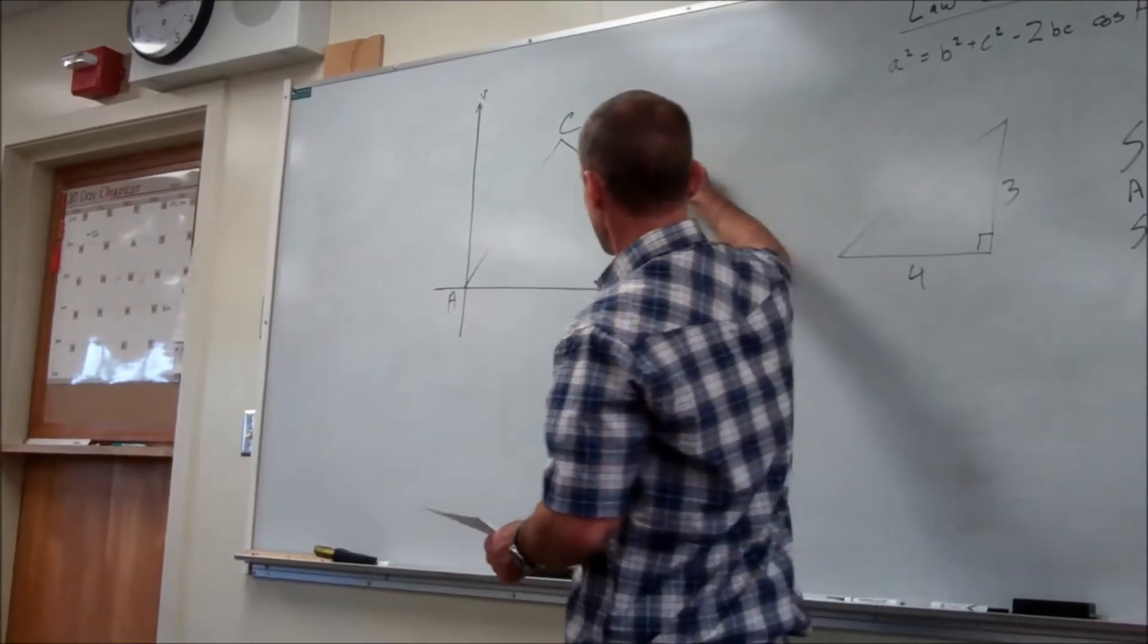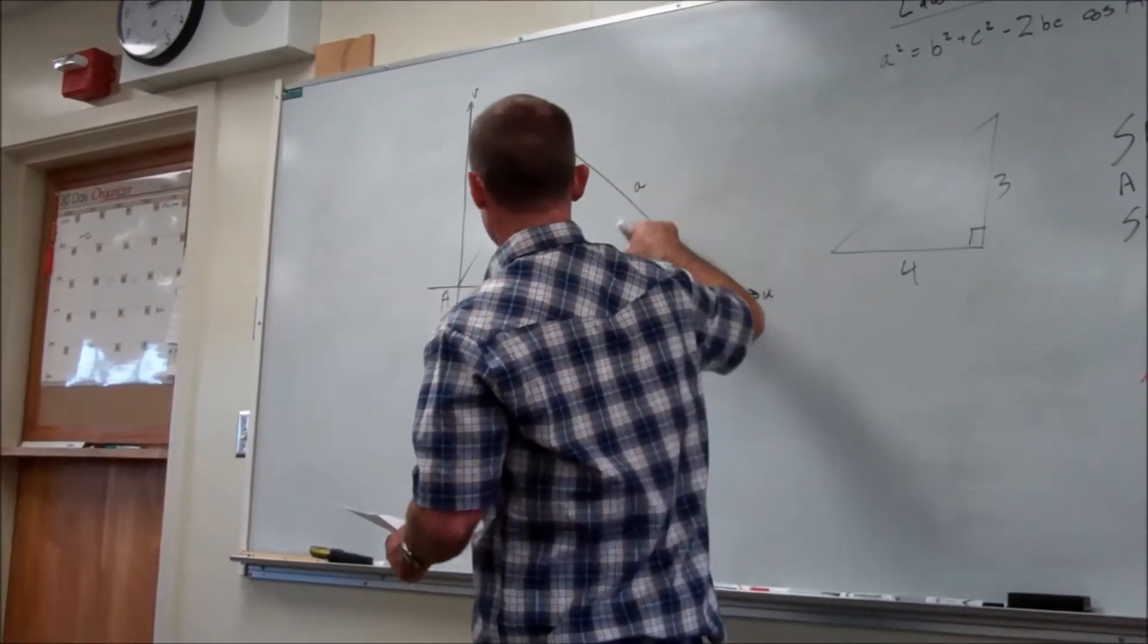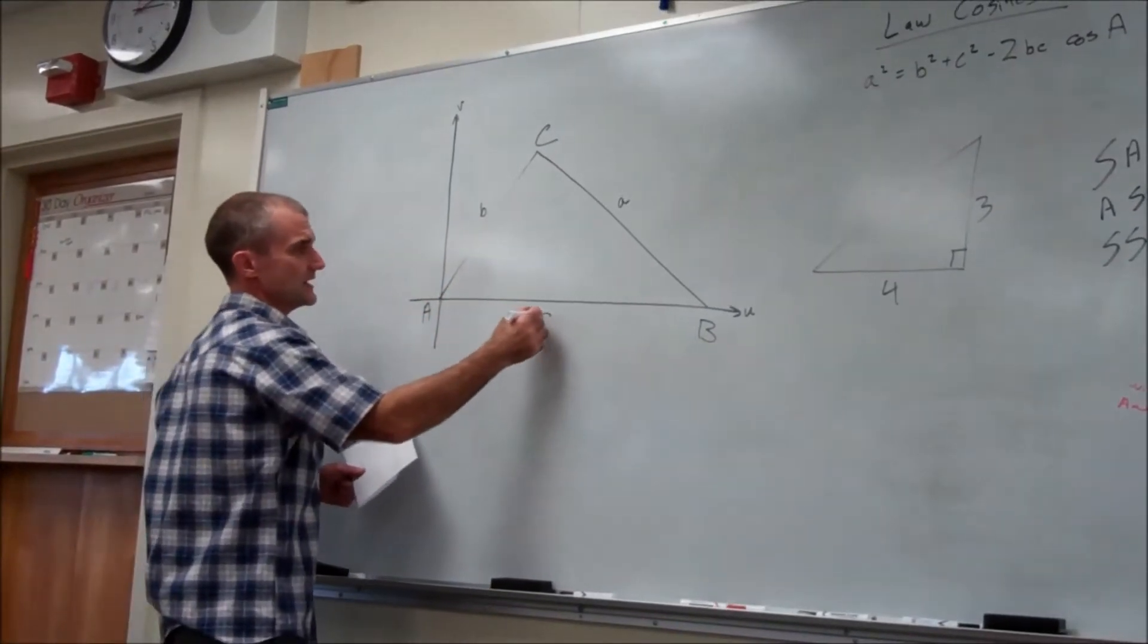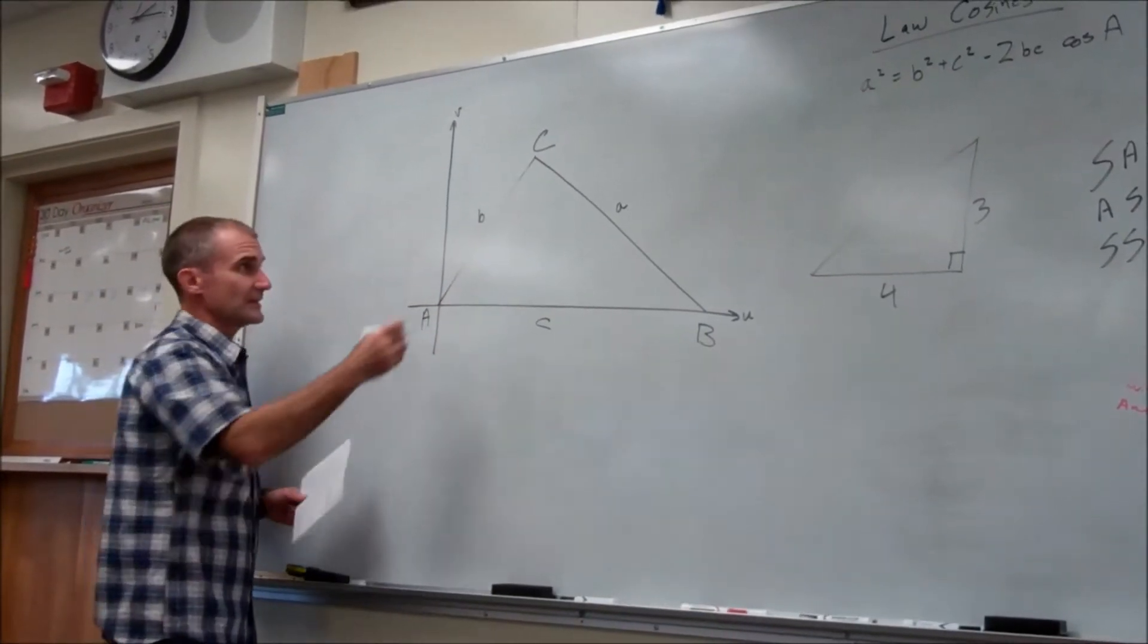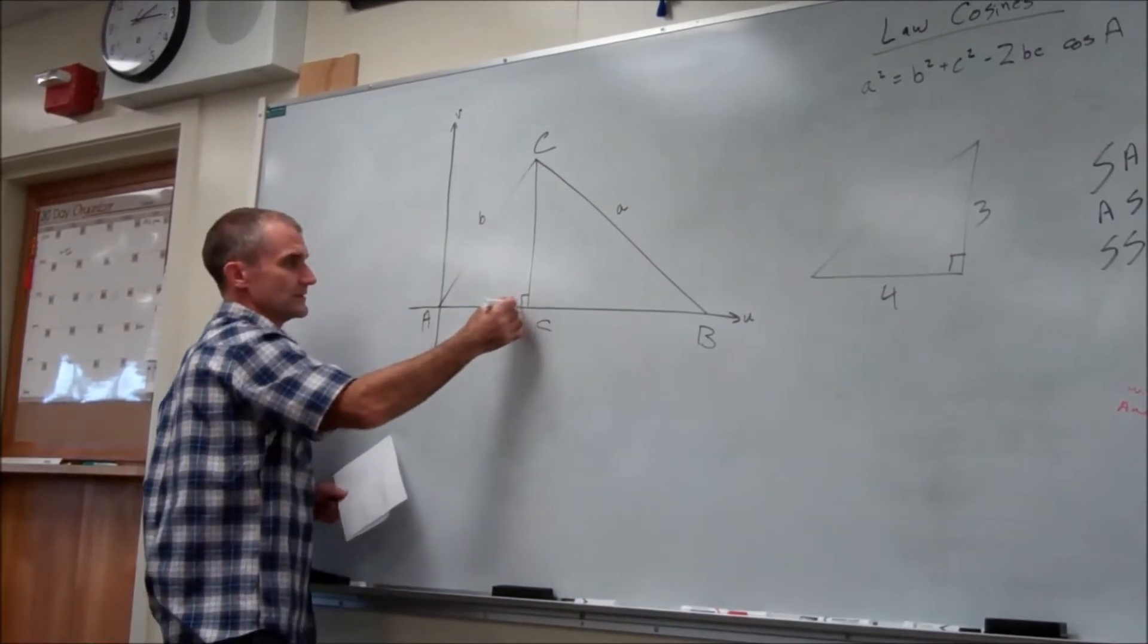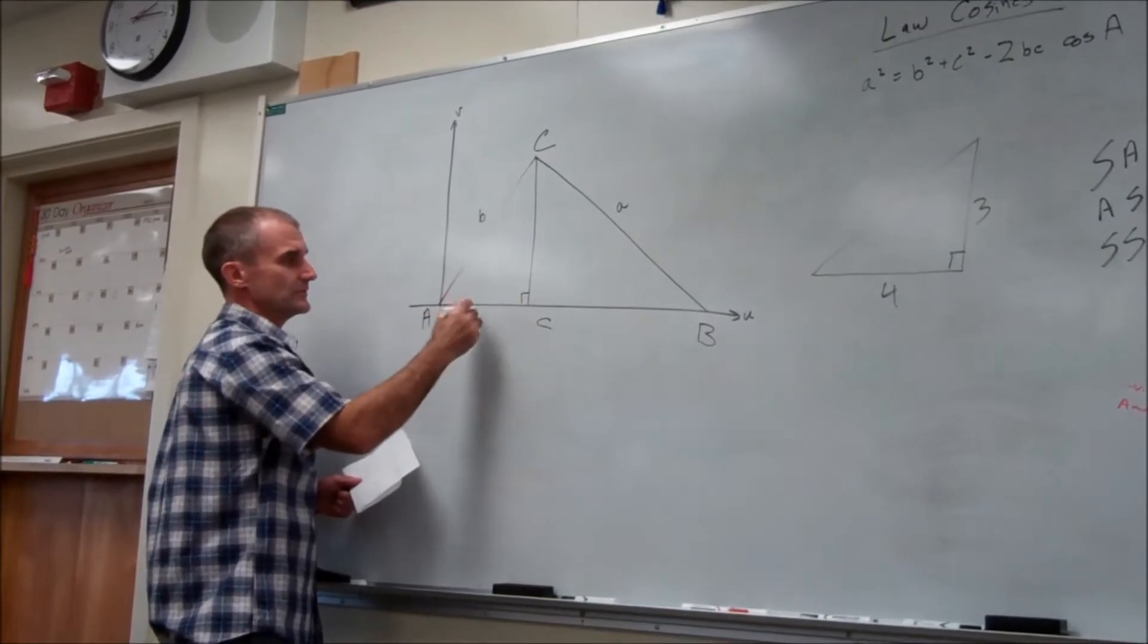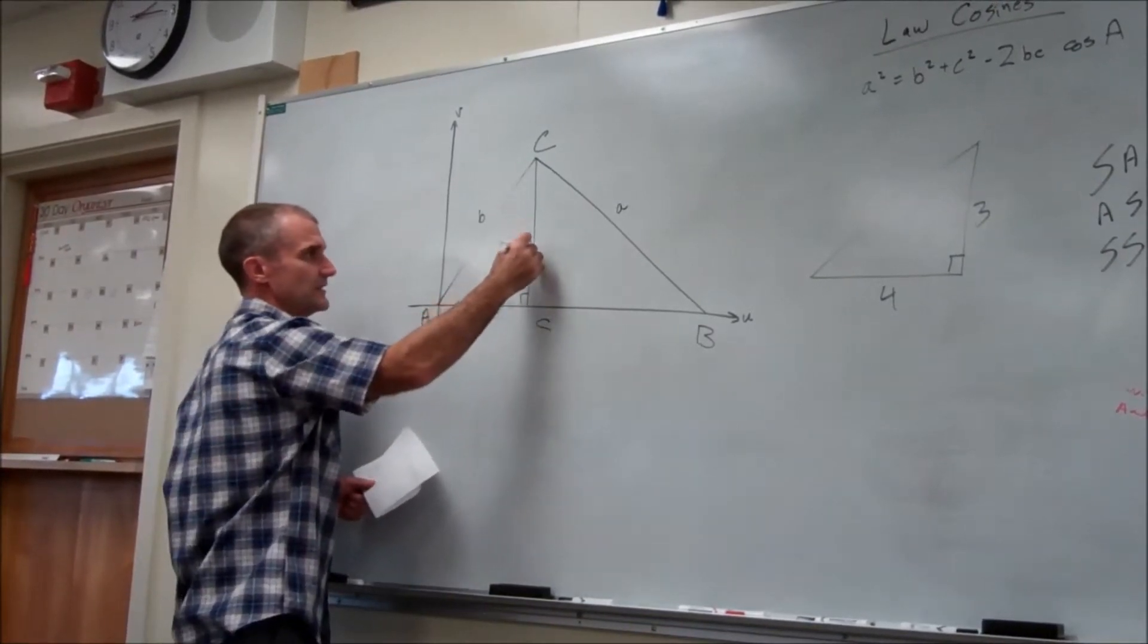So then this would be side a, opposite angle a. This would be side b, opposite angle b, and this would be side c. If I draw the altitude in this triangle, then I will go over u units, up v units.